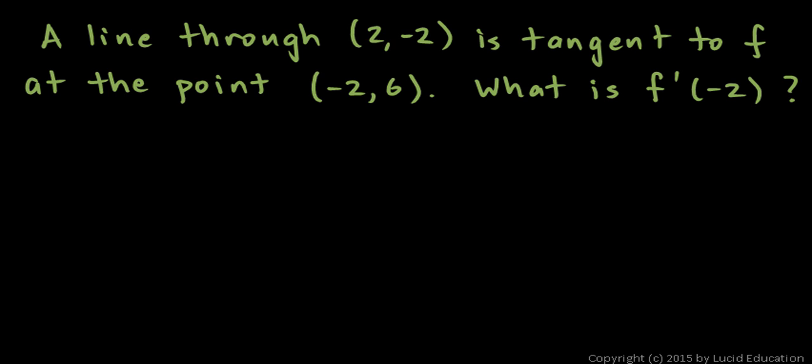I think the easiest way to solve this is to make a quick sketch, so let's draw our x, y axes, and let's think about what we know. A line through the point (2, -2),